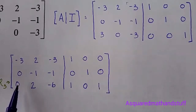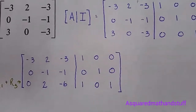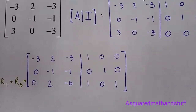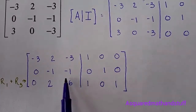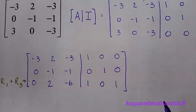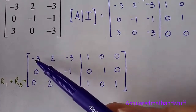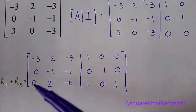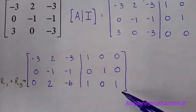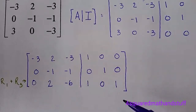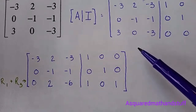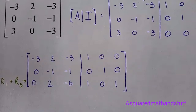Notice that this elementary row operation — row 1 plus row 3 — applied all the way across for this double augmented matrix. We added the entire row 1 to the entire row 3. So that's the process that we're going to use all the way down.